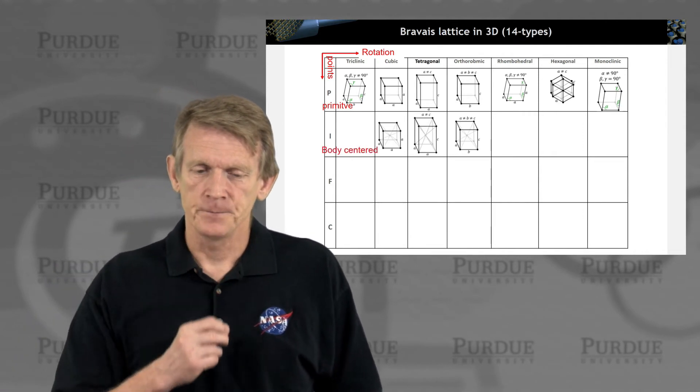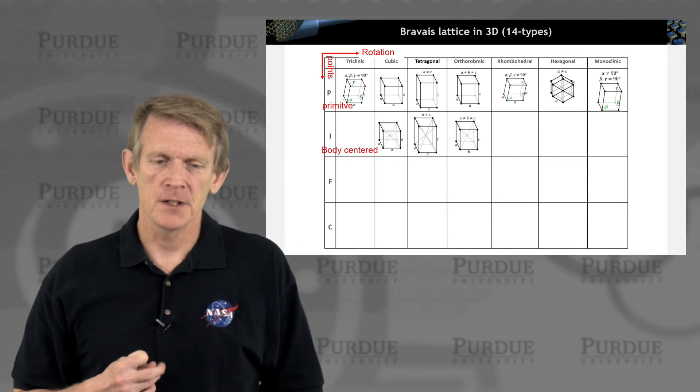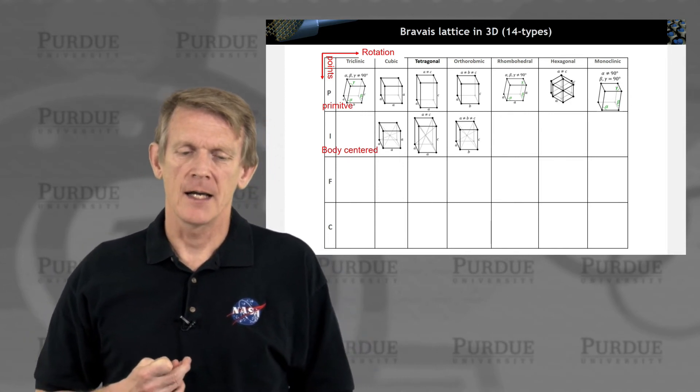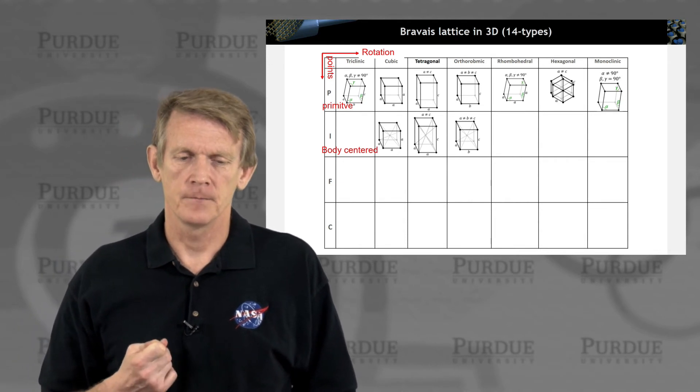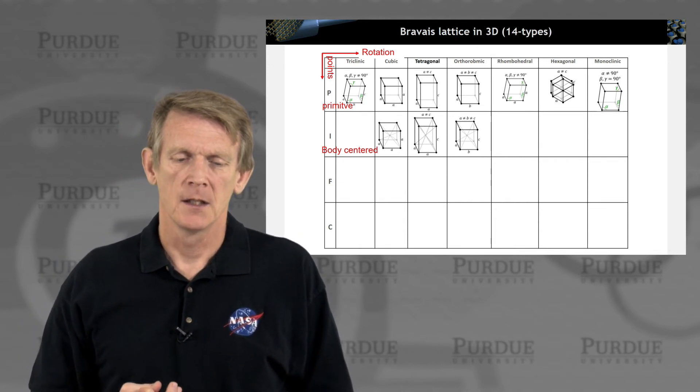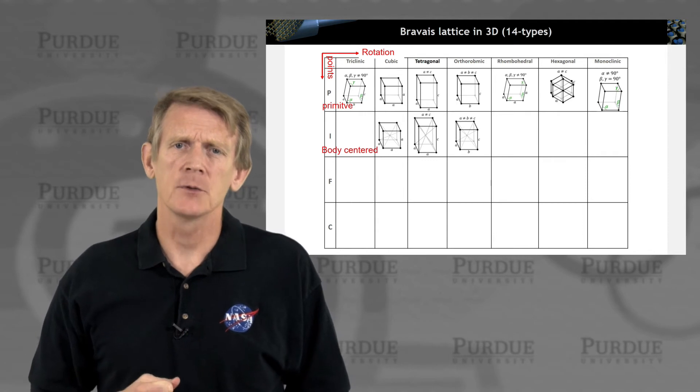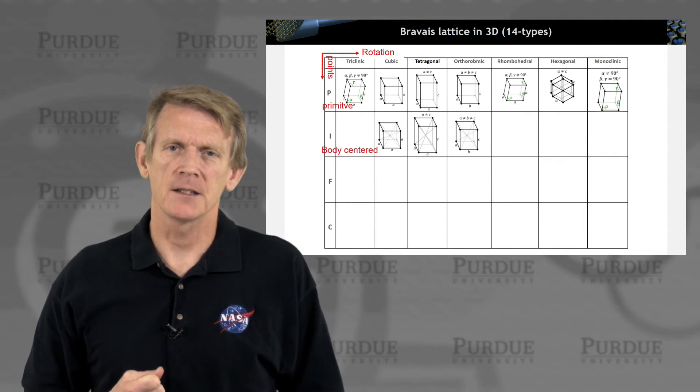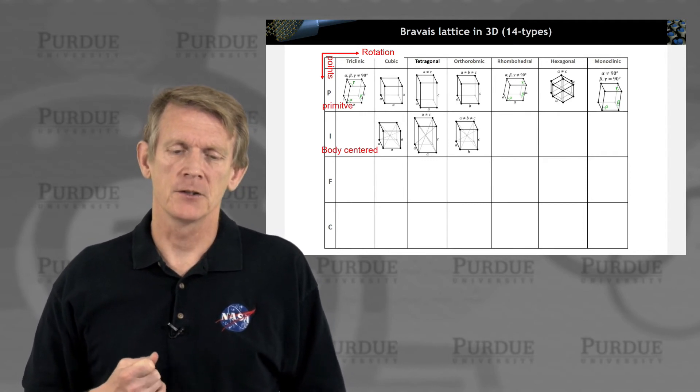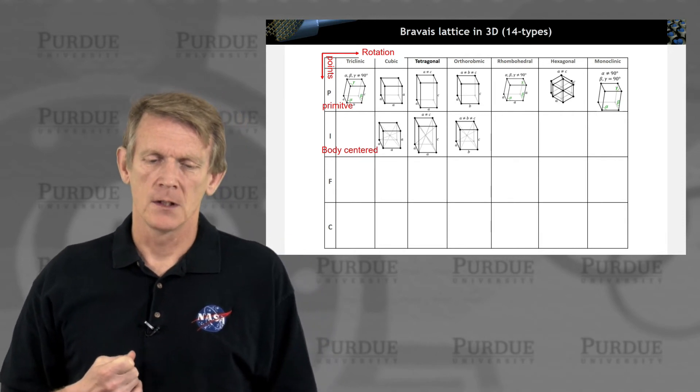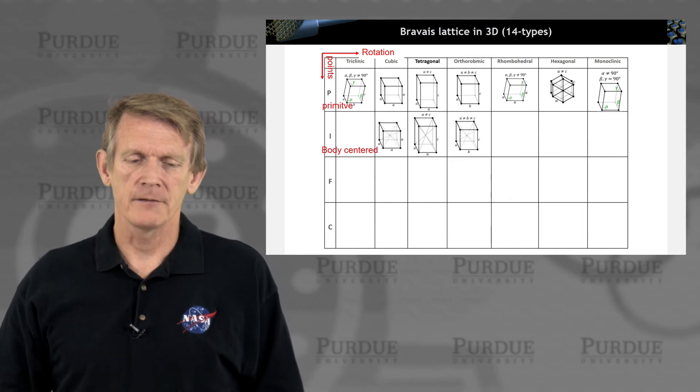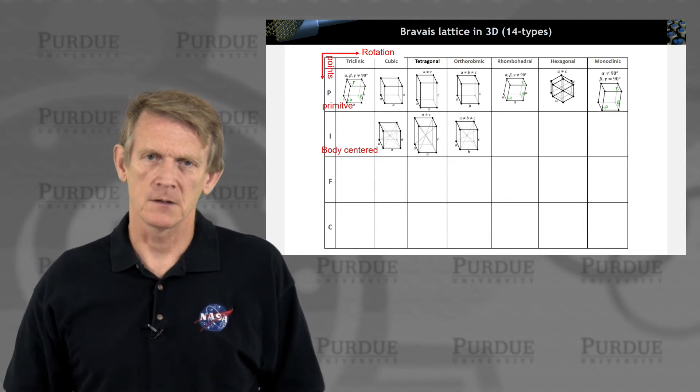Now, you can add to these space groups atoms into the very center. So you can add to the cube an atom into the middle, that's called body-centered cubic. You can do the same with tetragonal and orthorhombic. So in these Bravais lattices, you now have two atoms per unit cell.